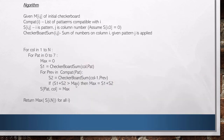What is the order of this algorithm? We have an outer loop in N, but the inner loops are just 0 to 7 — constant time. So this is an order N algorithm.